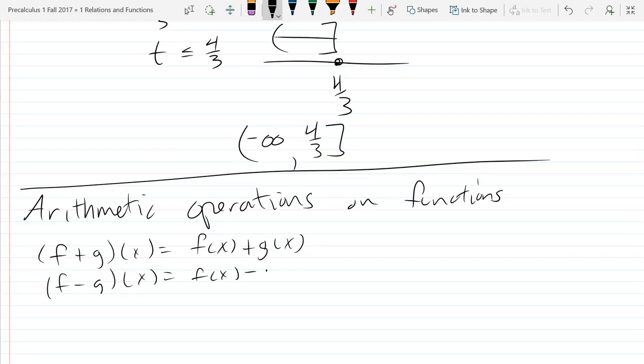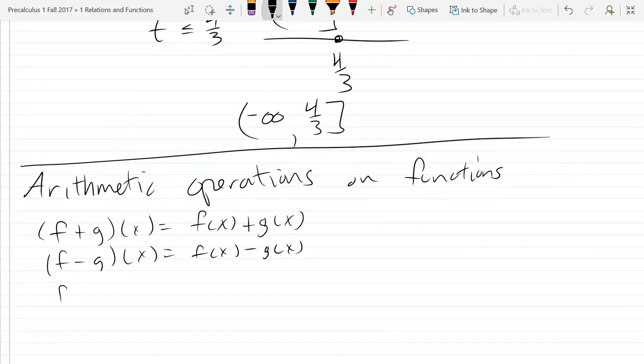It's f(x) minus g(x). Multiplication, we use a little dot, except multiplication is kind of dangerous because it looks a lot like function composition.